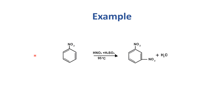Here is an example: if you already have nitrobenzene and perform nitration, it will form a meta-directed product. The nitration will occur at the meta position, not ortho or para, because the electron density is only available at the meta position.